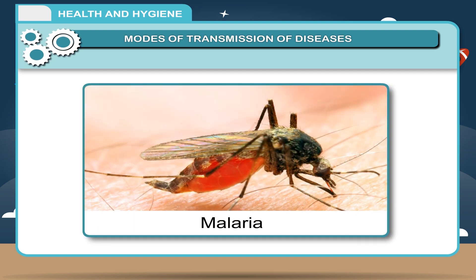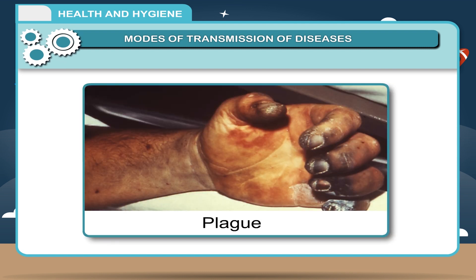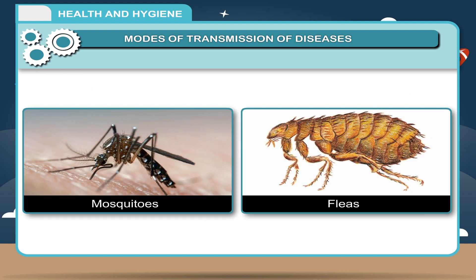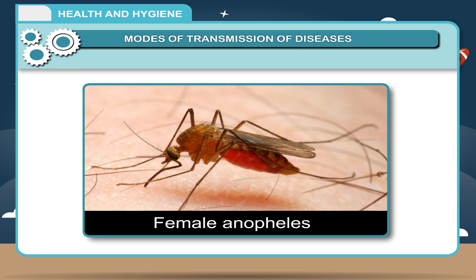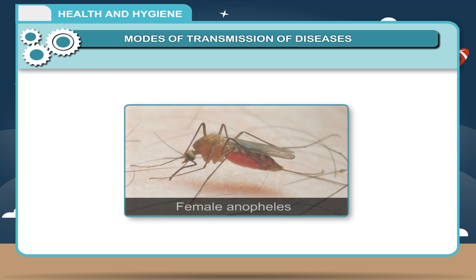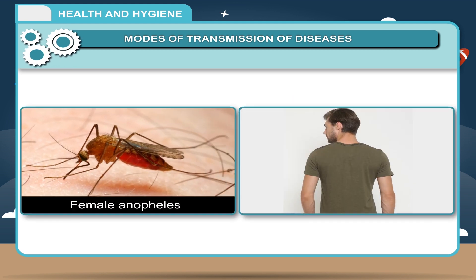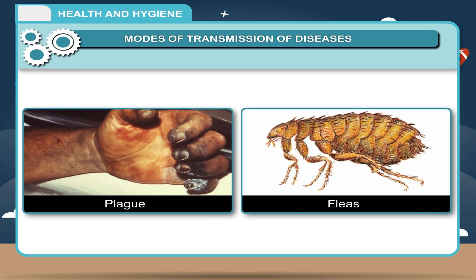Insects: Diseases like malaria, dengue and plague spread through insects. Insects like mosquitoes and fleas spread these diseases. Female Anopheles mosquitoes cause malaria in human beings. When a mosquito bites a malaria patient, it carries the malaria-causing microbes in its body. When the same mosquito bites another person, the malaria-causing microbes enter the person's body and cause the disease. Plague is transmitted by rat fleas.